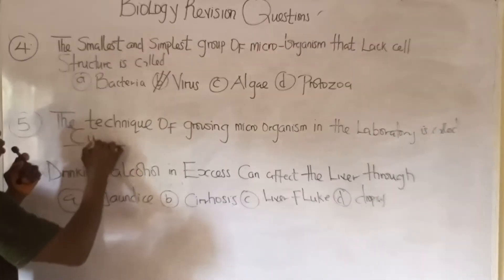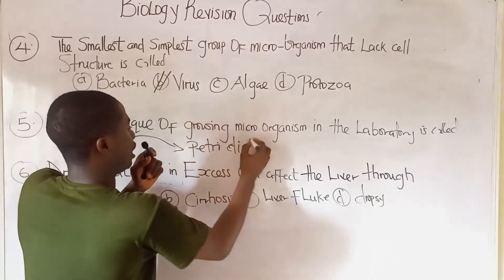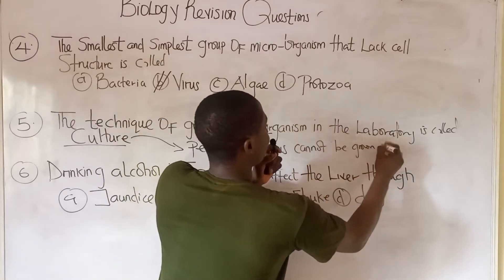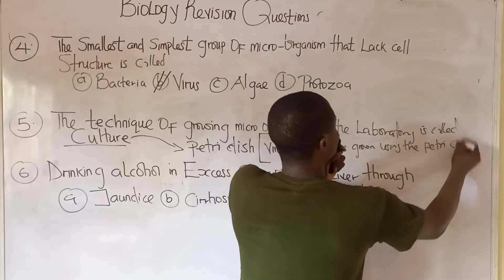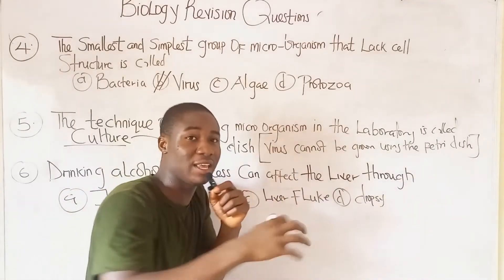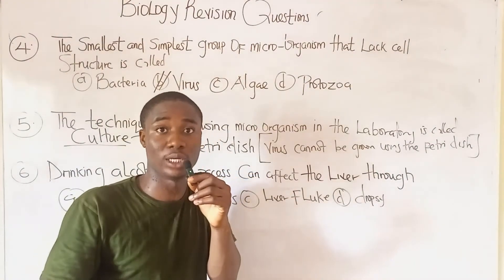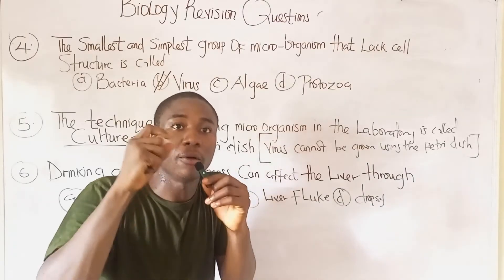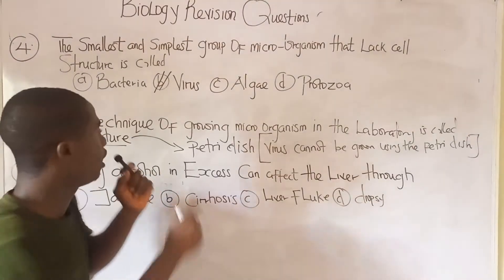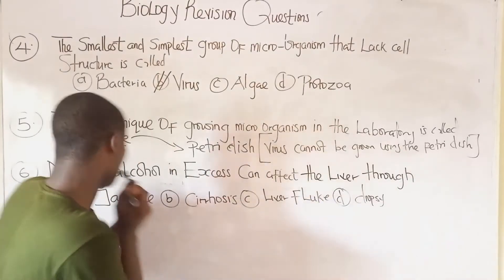Question five: the technique of growing microorganisms in the laboratory is called culture, and the instrument used is called the petri dish. It must be noted that viruses cannot be grown using a petri dish because they lack cell structure. When a virus is in a non-living environment it becomes non-living and is called a virion, and it will crystallize.